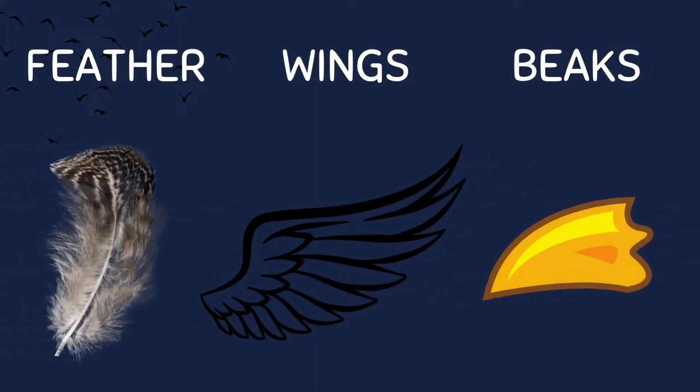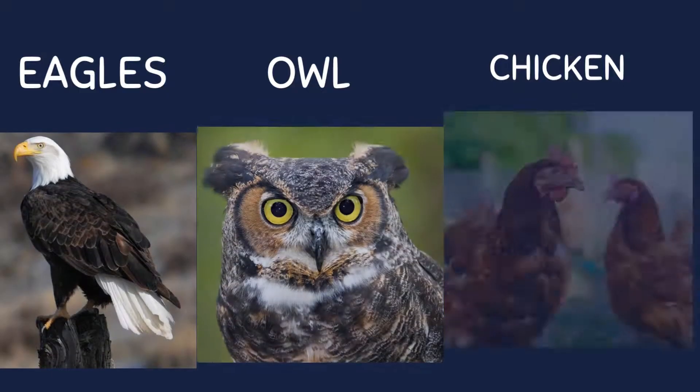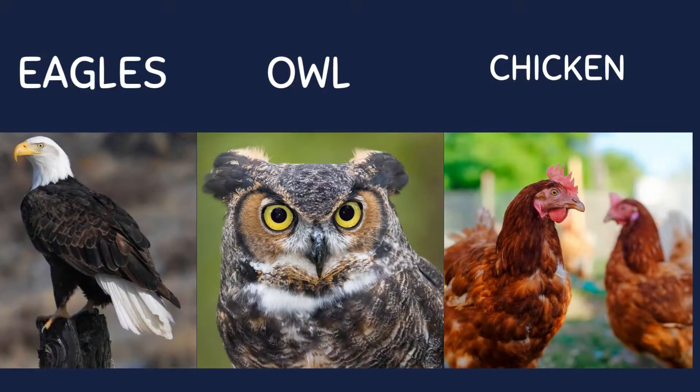Birds are a group of animals that have feathers, wings, and beaks. They lay eggs and are known for their ability to fly. Some common examples of birds include eagles, owls, and chickens.